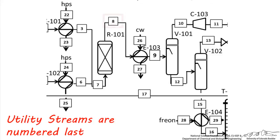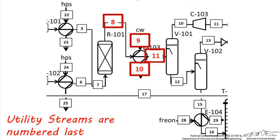The main reason for this is to organize all utility streams sequentially and in one block, so that they are easier to read from the table. If these streams were numbered such that they were alternating between process and utility streams, it would be much harder to track the temperature changes in each one when reading information from a table. This is why it makes sense to number process streams first, in the order of the path of the process, and utility streams last.